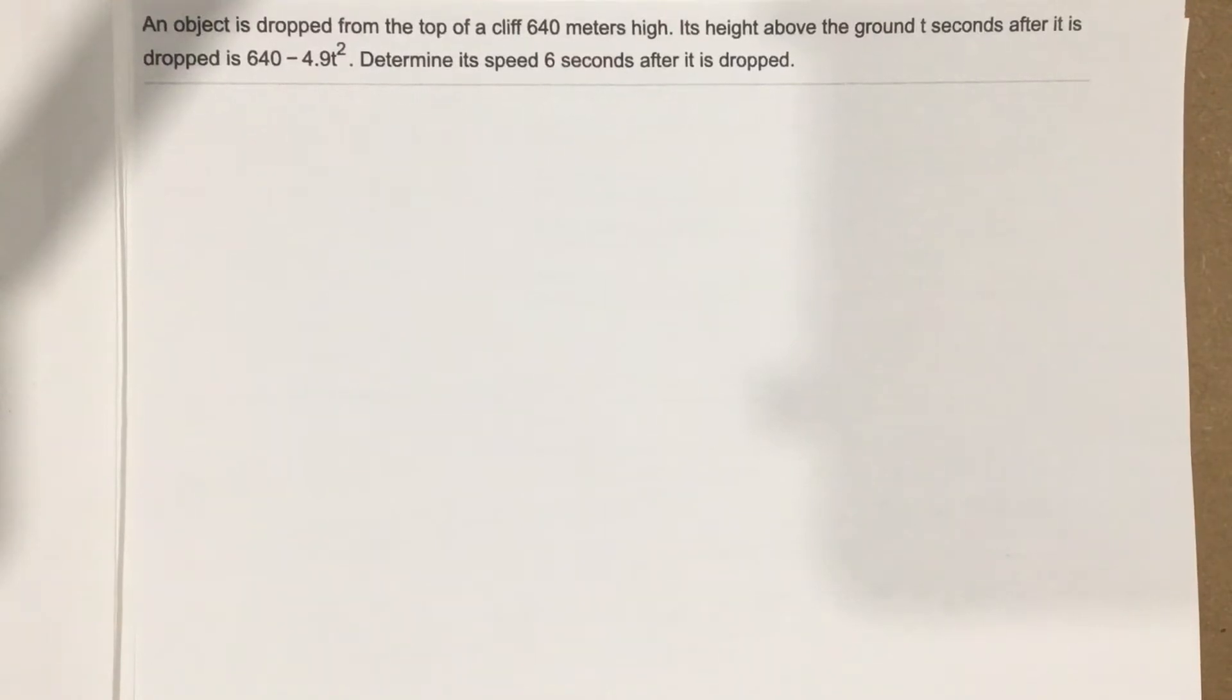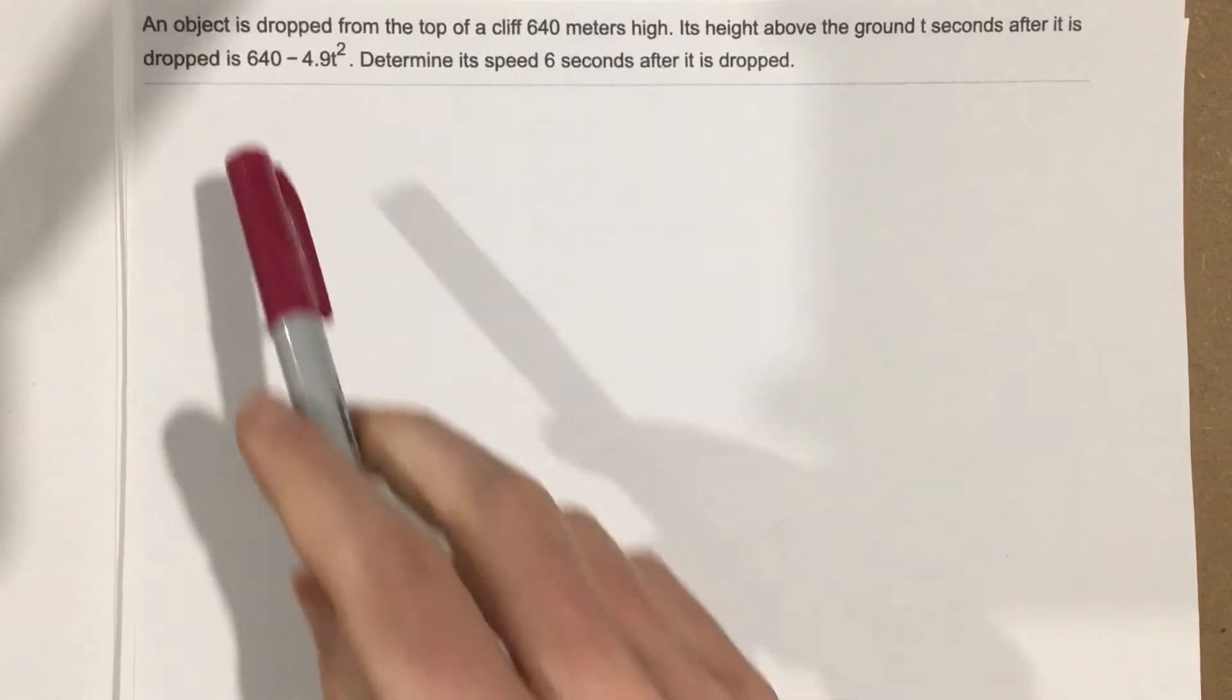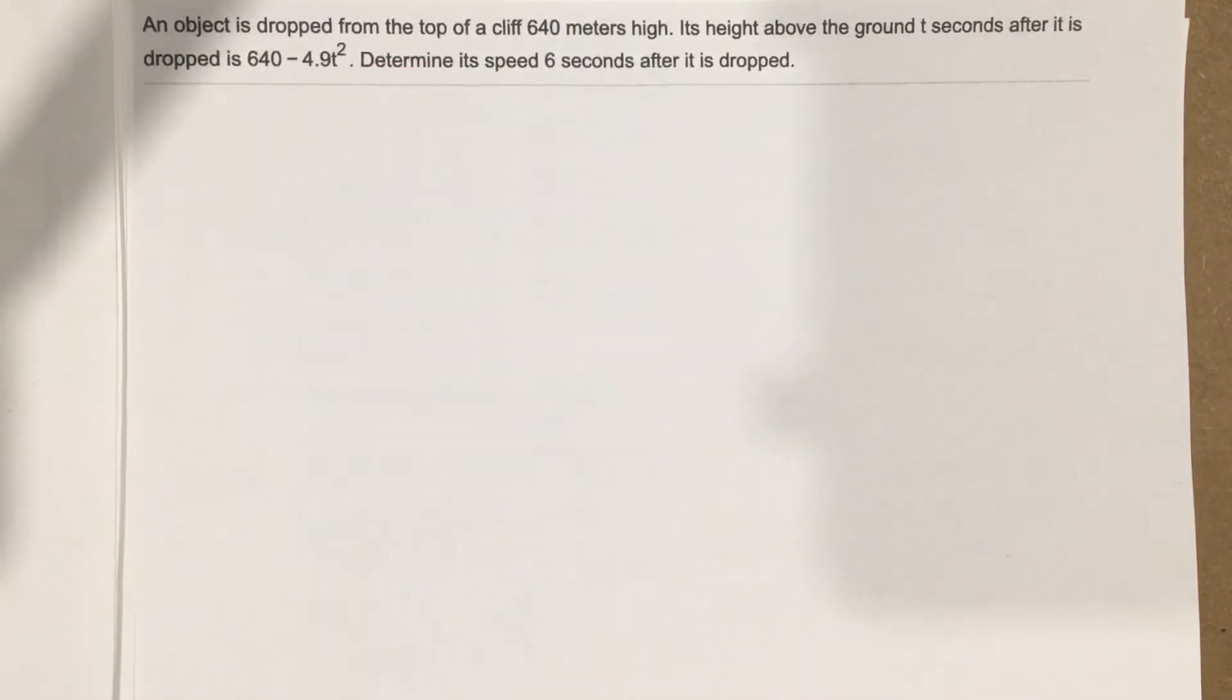This is problem number 8 from section 3.1. An object is dropped from the top of a cliff 640 meters high. Its height above the ground t seconds after it is dropped is 640 minus 4.9t squared. Determine its speed six seconds after it is dropped.